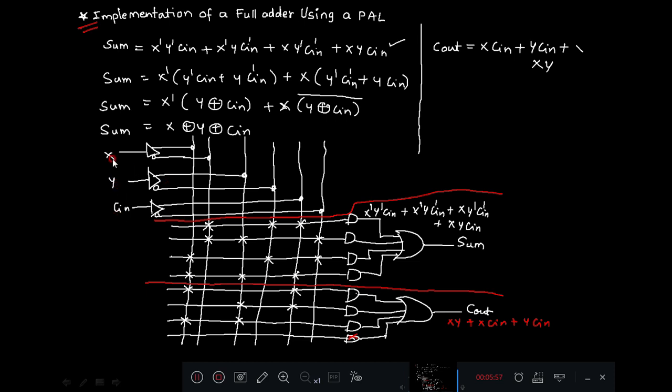You can observe here there are six vertical lines which correspond to X, X dash, Y, Y dash, and CIN, CIN dash. So six vertical lines are possible here. And then we need to calculate total seven product terms and two functions. You can identify two functions, which are SUM and COUT.